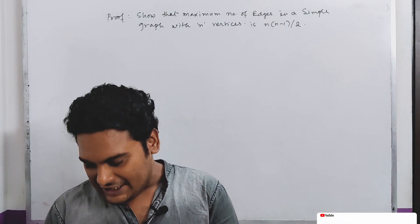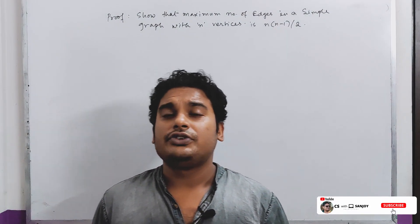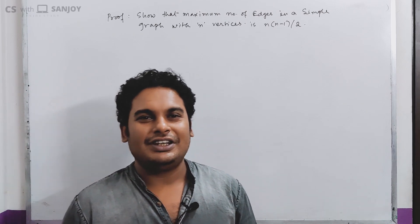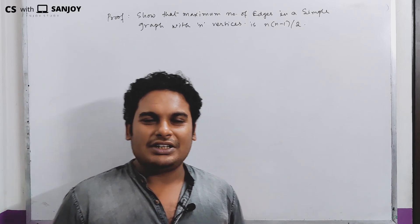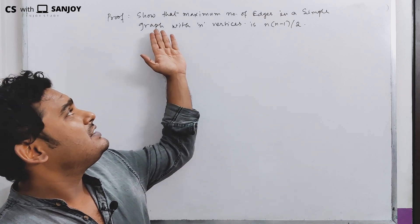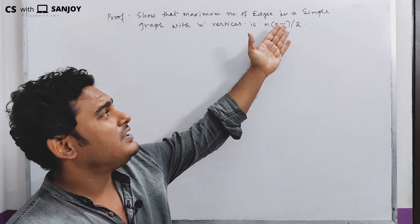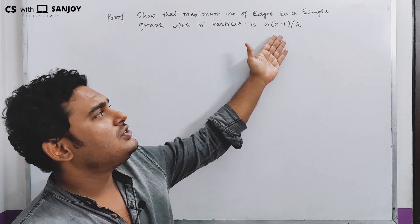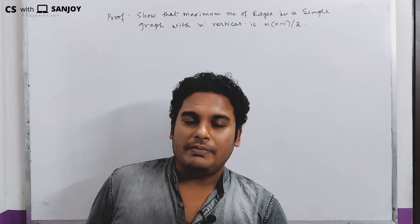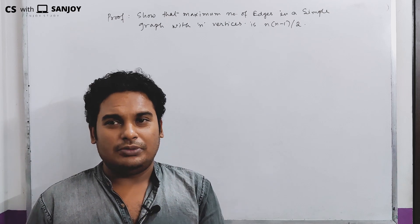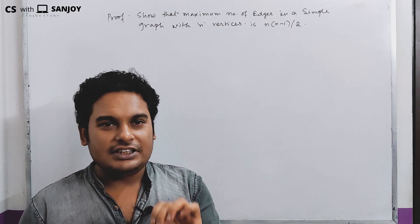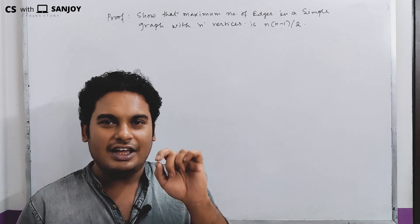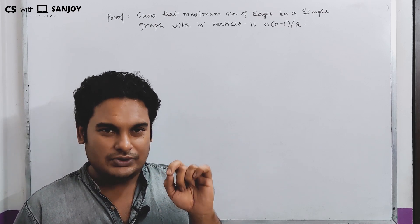Hello and welcome viewers, welcome to our channel C-Sweet Shonjoin. Today we have a very vital proof of graph theory, which is a very important proof in the exam. The proof shows that the maximum number of edges in a simple graph with n vertices is n(n-1)/2. When there is a maximum number of edges, we have a complete graph, which has n(n-1)/2 edges.